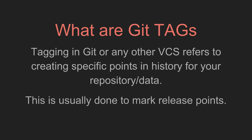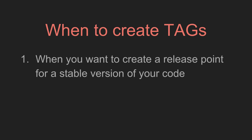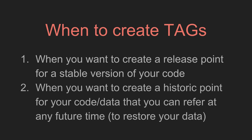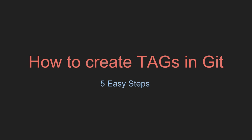Tagging is usually done to mark some release points. For example, if your project is stable and you want to mark it as release 1.0, you can create a tag for that. You can also create tags whenever you want to mark a historic point for your project or data — whenever you want to create a release point for a stable version or a historic reference for the future.